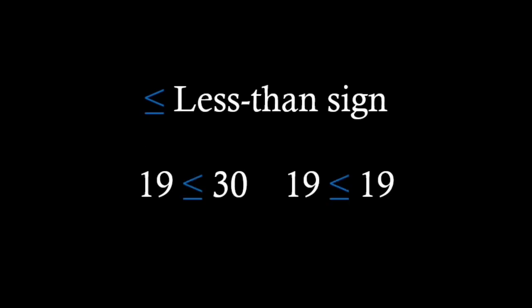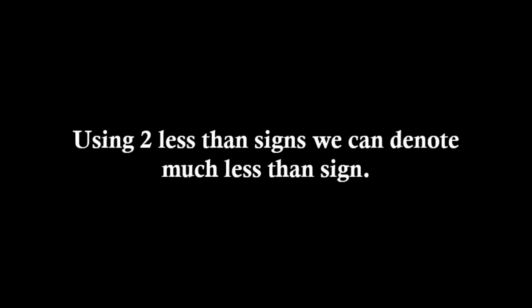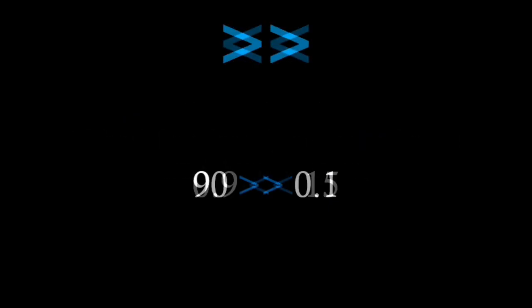If we add a line to the less than symbol, we get less than or equal sign. As the name suggests, it indicates that one value is smaller or equal to another. The same is true for greater or equal to sign. Using two less than signs, we can denote much less than sign. The same is true for much greater than sign.